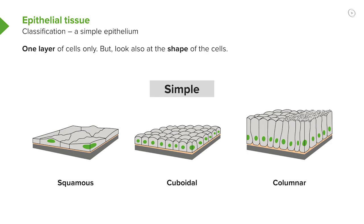If the height, the width, and the depth of the cell is about the same, we call it a simple cuboidal epithelium. And if the height is far greater than both the width and the depth, then we call it a simple columnar epithelium.